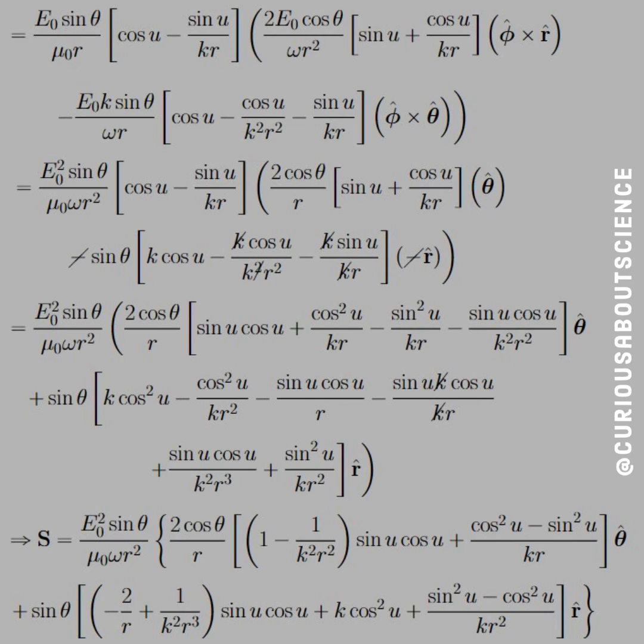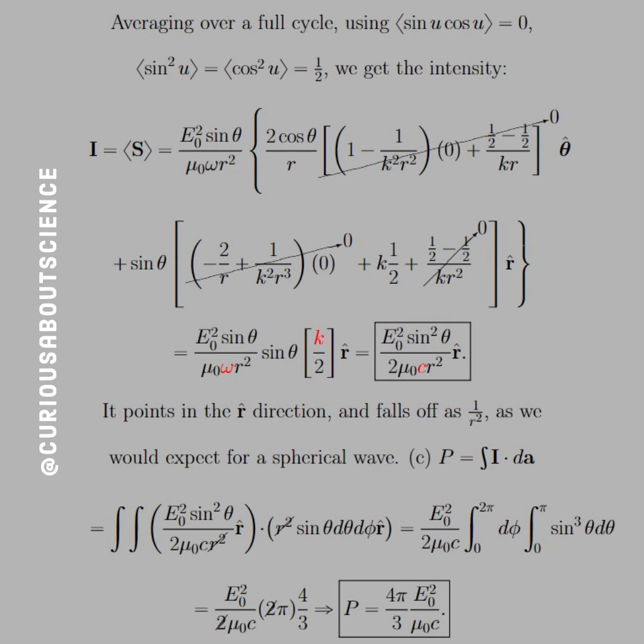We're averaging over a full cycle using sin u cos u = 0 since they cancel out. If you look at the integrals, all their areas cancel over 2π in their product anyways. And then here we have sin²u = cos²u = 1/2. Good to go there.